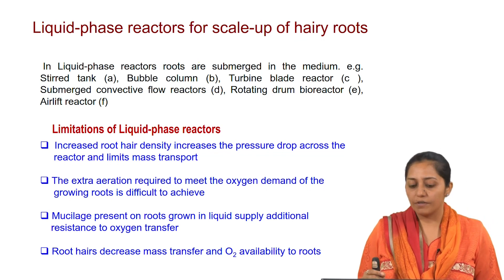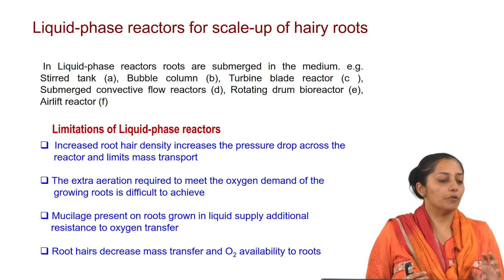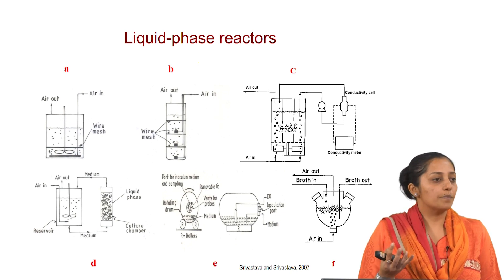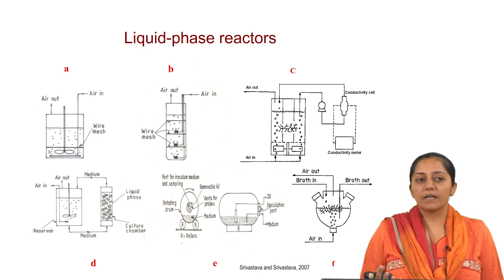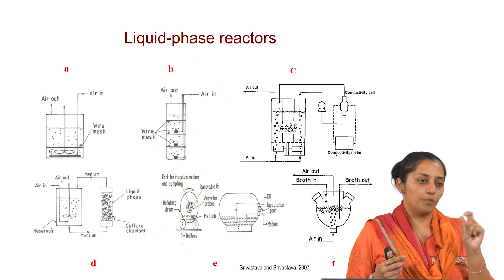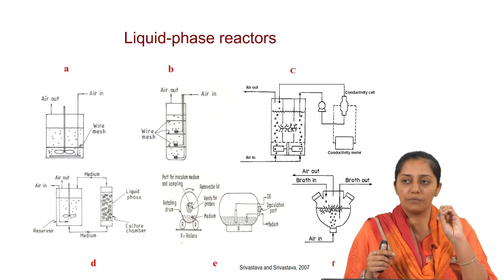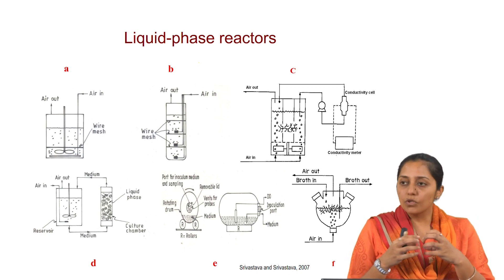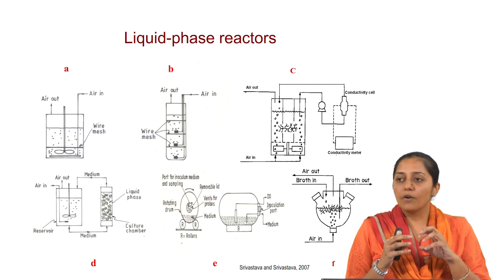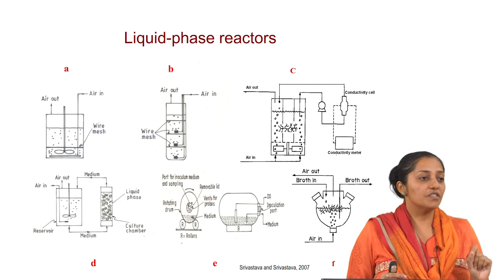Limitations found with liquid phase reactors: increased root density increases the pressure drop across the reactor and limits mass transport. For example, in a packed bed system, as biomass grows there is increased pressure drop and mass transfer limitations. Similarly, configurations using small polypropylene mesh baskets — where roots are inoculated onto the mesh and dropped into liquid medium — mean that as roots grow around the mesh, the inner core will not have the same oxygen availability as the outer surface. These are severe mass transfer challenges in hairy root cultures.